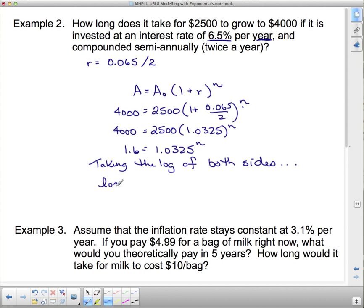Taking the log of both sides, we get the log of 1.0325, and we know that because of power law of logarithms. And now we're going to divide both sides by the log of 1.0325, so we get the log of 1.6 divided by the log of 1.0325, and that is going to equal our n.